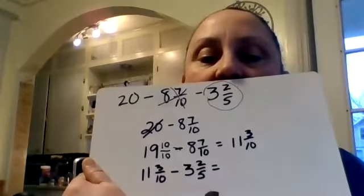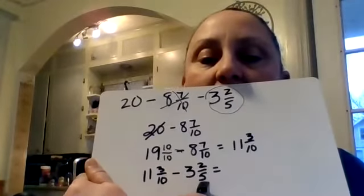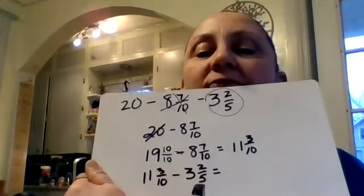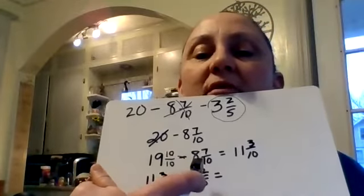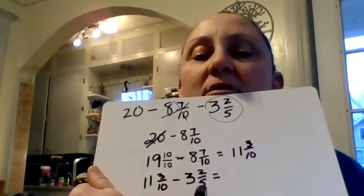Okay, shortcut - one can turn into the other. I can make a 5 into a 10 really easy by multiplying 5 times 2. So if I do 5 times 2 here, I have to do 2 times 2 there. I have to do the same thing to both numbers. So that's going to end up being 3 and 4 tenths.